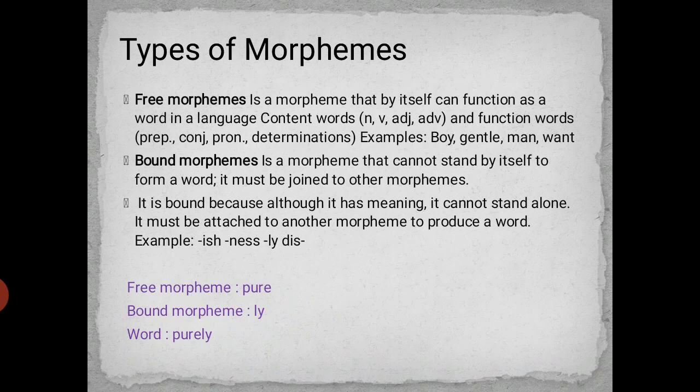It is bound because, although it has meaning, it cannot stand alone. It must be attached to another morpheme to produce a word. For example: -ish, -ness, -ly. Child plus -ish gives childish. The free morpheme pure, added with the bound morpheme -ly, gives the word purely.